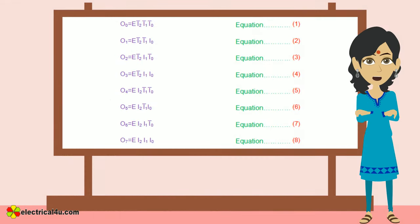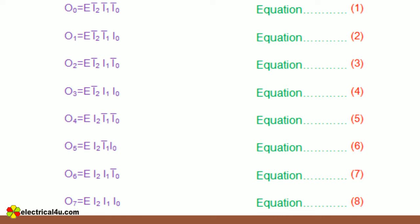Thus, the Boolean equations for the outputs of the 3 to 8 decoder are given by: O0 equals E I2 bar I1 bar I0 bar, and that is equation 1. O1 equals E I2 bar I1 bar I0, and that is equation 2.